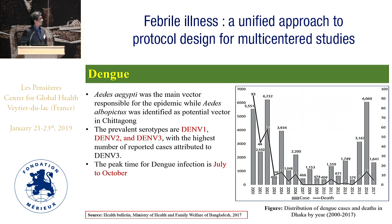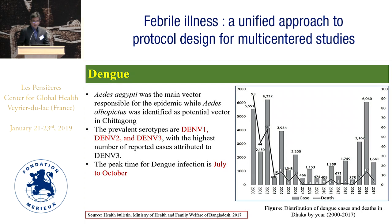The peak infection time for dengue is between July and October. There have been several outbreaks: one in 2000 with almost 5,500 cases and 93 deaths, and another in 2002 with more than 6,000 cases and 58 deaths. However, according to 2017 data, there were 1,641 cases with 5 deaths.